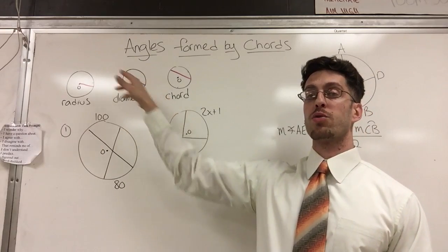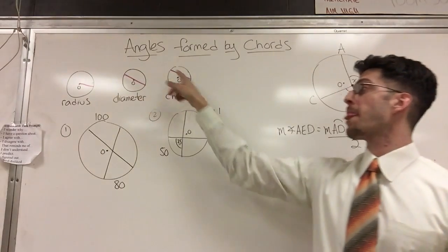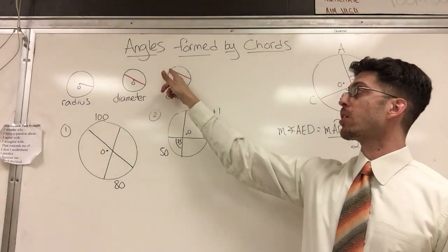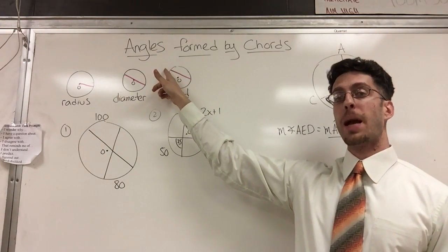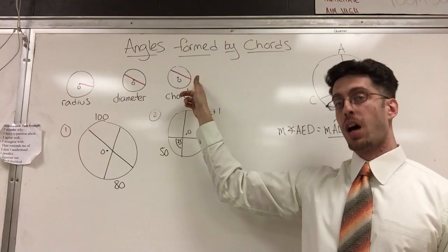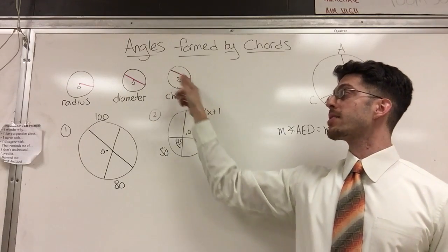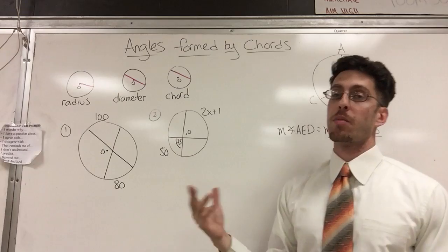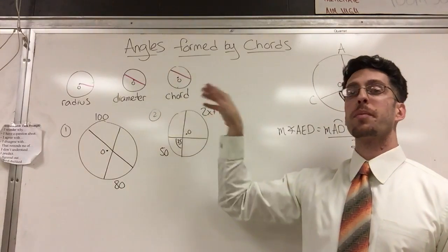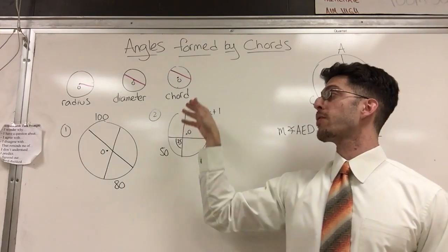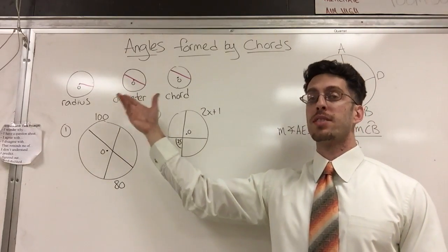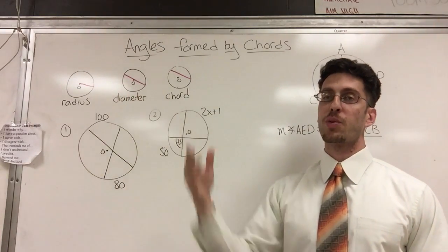Diameter is a line that goes through the center all the way across. And now we got a chord. A chord is a line segment that goes from one point on the diameter of a circle to another point on the circle, not necessarily going through the center. Technically it could go through the center, but it doesn't have to. Any line segment in a circle is a chord. If it goes through the center it's a special chord we call a diameter.